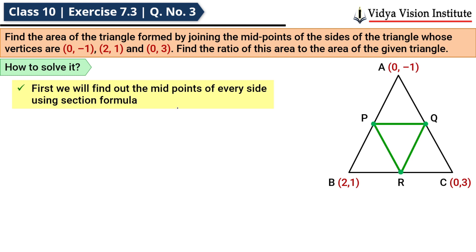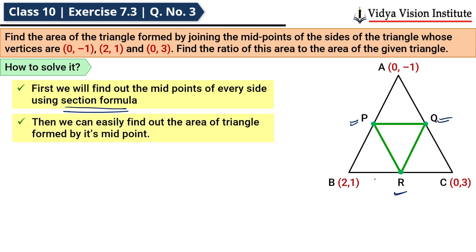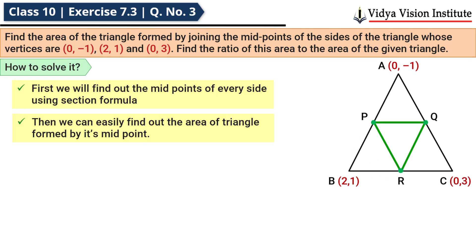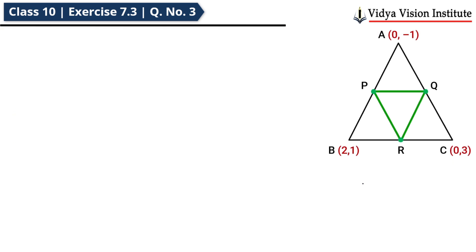First, what we need to do is find the coordinates of each midpoint of the sides using the midpoint (section) formula. Once we get the coordinates of the midpoints, we can find the area as well. So first, we will find the coordinates of P, Q, R using the midpoint formula, and after getting the coordinates, we will find the area of triangle PQR.